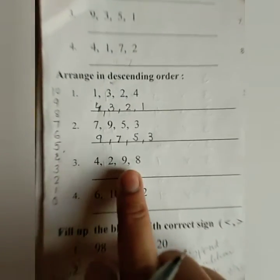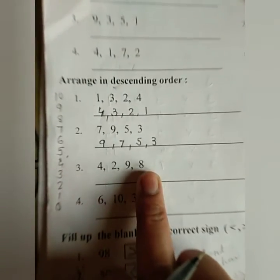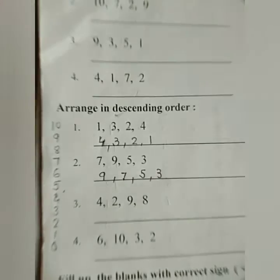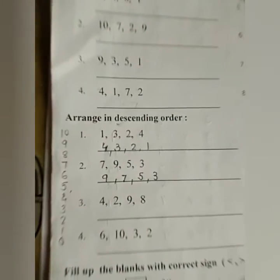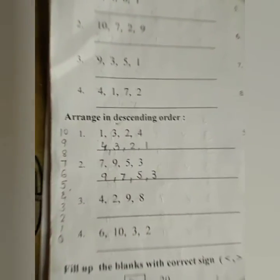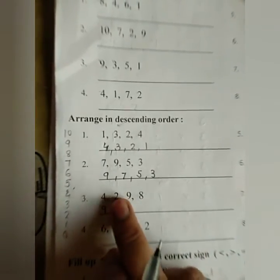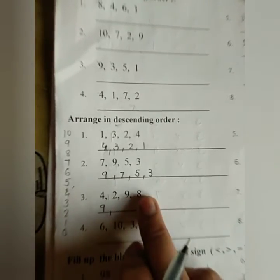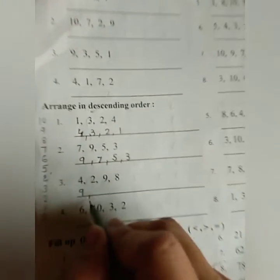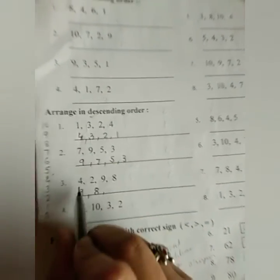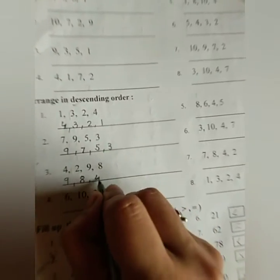Next: 4, 2, 9, 8. Which is the biggest number? Nine. Next: 4, 2, 8. इसमें से सबसे बड़ा? Eight. Then: 4, 2. इसमें से four, और last बचा two.